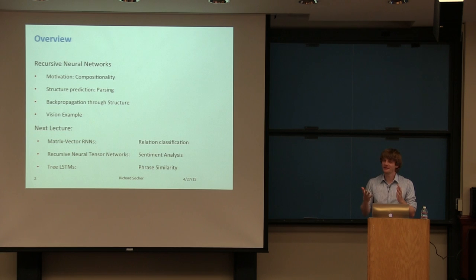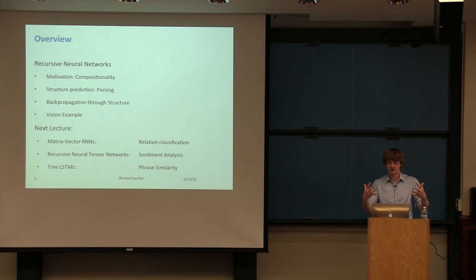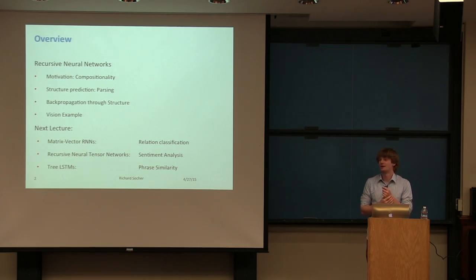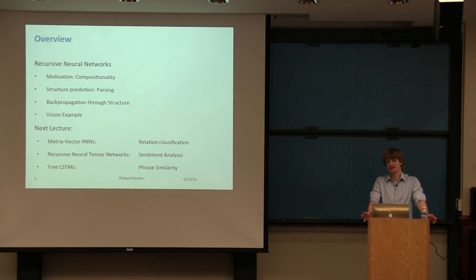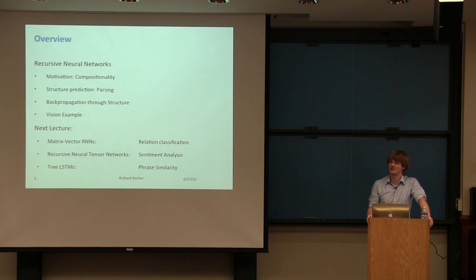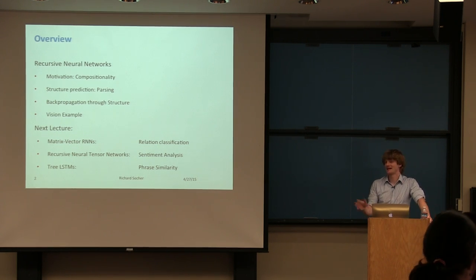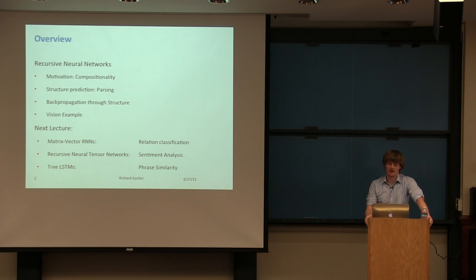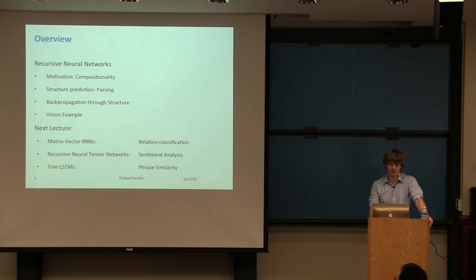Today we'll motivate recursive neural networks with compositionality — a technique to get to the meaning of longer phrases. We'll look at a structure prediction objective function, and backpropagation through structure, which is very similar to standard backpropagation with just three slight modifications. These models are very general, so if time allows, we'll also cover a computer vision example, since the exact same model works for images. In the next lecture we'll look at extensions to standard recursive neural networks.